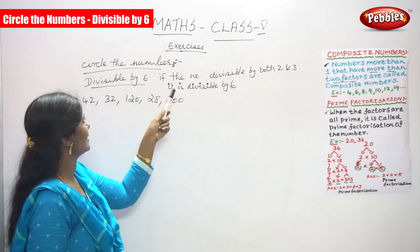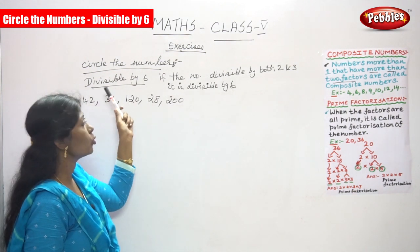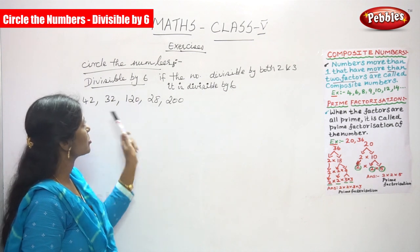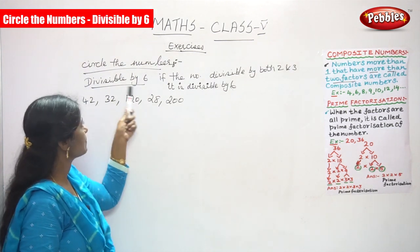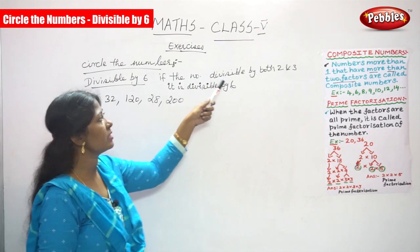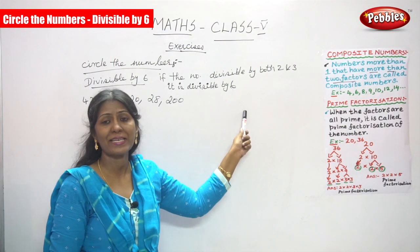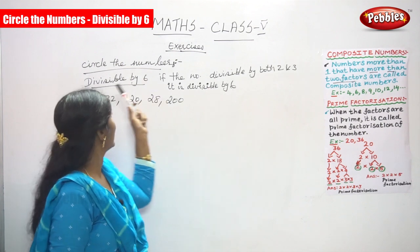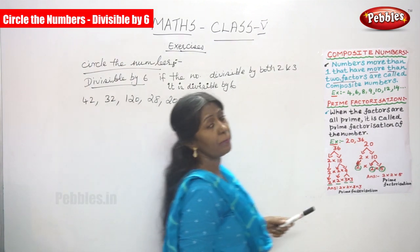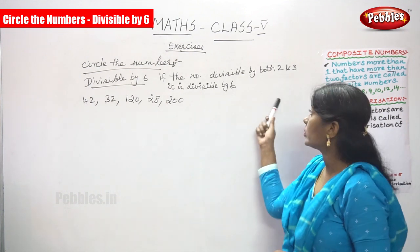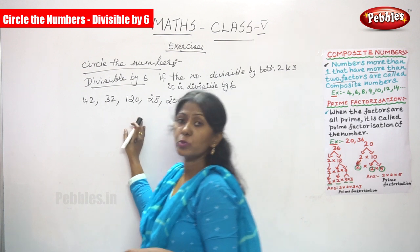Now we are going to see another sum on divisibility — divisible by 6. If a number is divisible by both 2 and 3, it is divisible by 6. That is the rule of divisibility by 6.